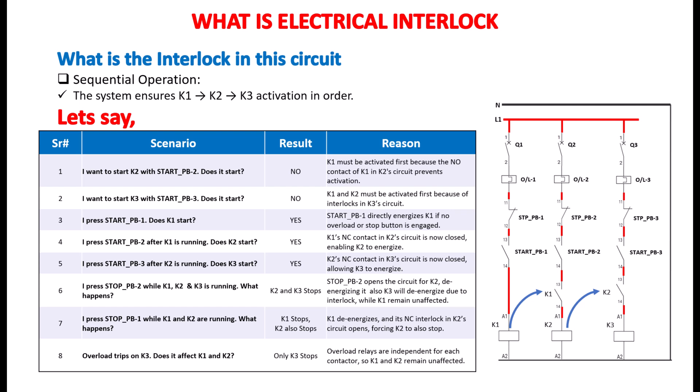Scenario 6. What happens if I press STOP PB2 while K1, K2, and K3 are running? K2 and K3 stop. The STOP button breaks K2's circuit, de-energizing it, and it also stops K3 as the K2 interlock is used there, but K1 remains unaffected.